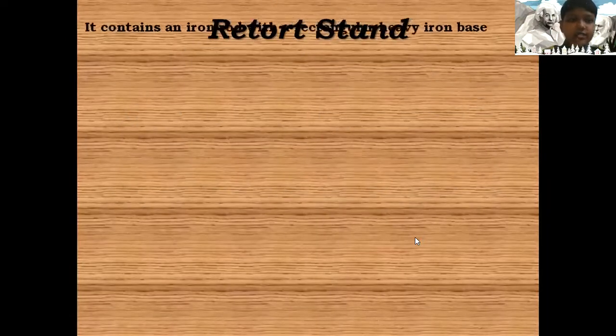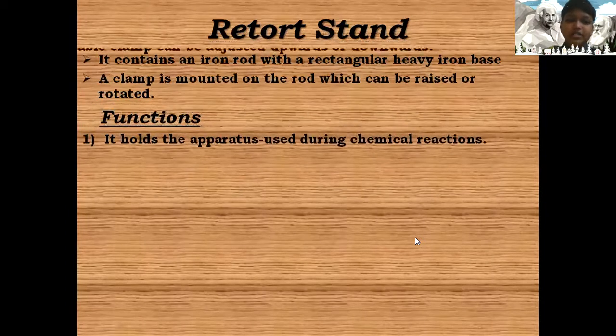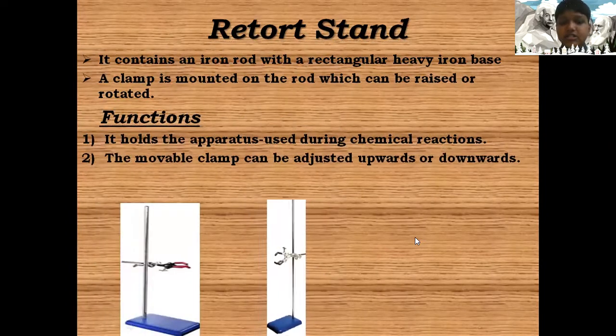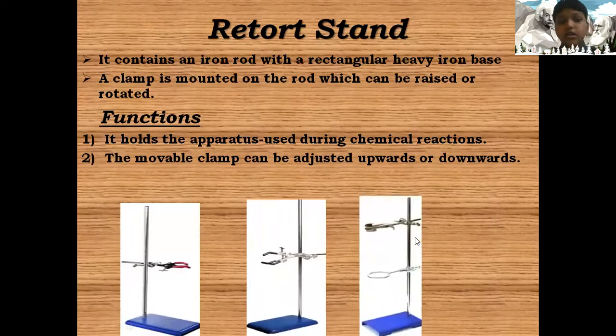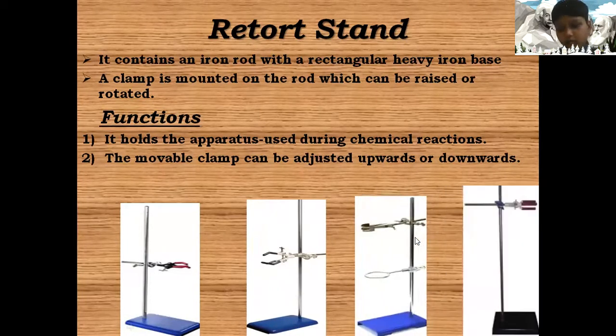Retort stand: It contains an iron rod with a rectangular heavy iron base. A clamp is mounted on a rod which can be raised or rotated. Functions: It holds the apparatus as used during chemical reactions. The movable clamp can be adjusted upwards or downwards.